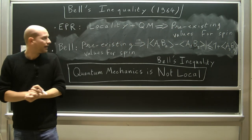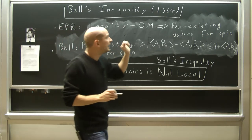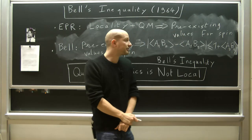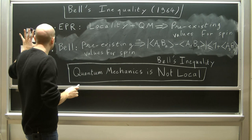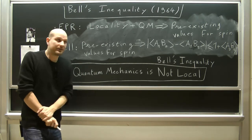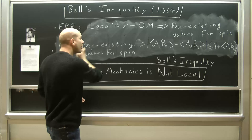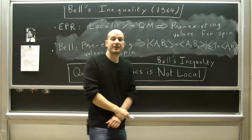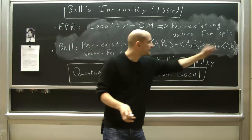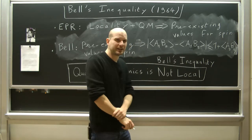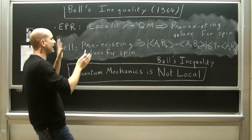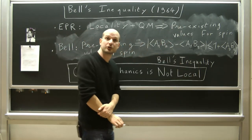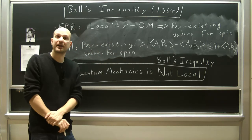In this paper, John Bell wanted to see if one could save the notion of locality in quantum mechanics by introducing pre-existing values for spin. Bell proved a theorem that if there are pre-existing values for electron spin, then necessarily some statistical inequality must hold true. I've written this statistical inequality here — the details don't really matter. The important point is that if there are pre-existing values for spin, then some inequality has to hold true, and this inequality has since come to be called Bell's inequality.